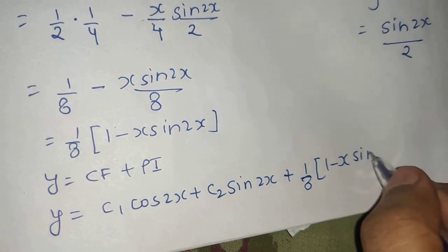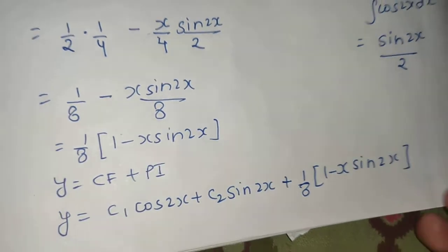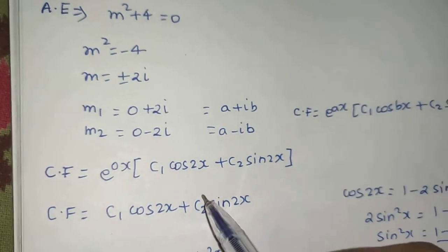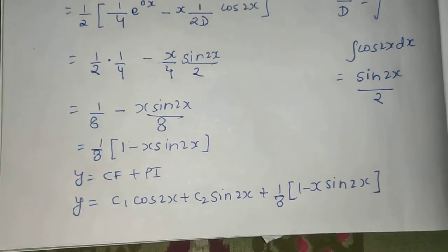I hope you understood this question. The basic methodology was same: auxiliary equation, then the rule for complementary function - we find the complementary function, then the particular integral. Final answer was y equals to CF plus PI.